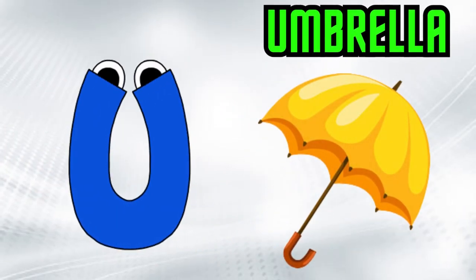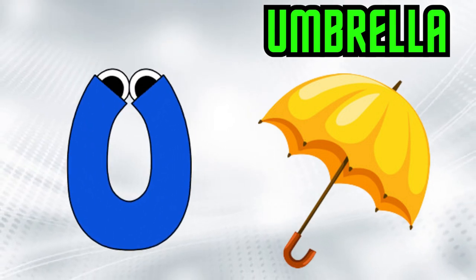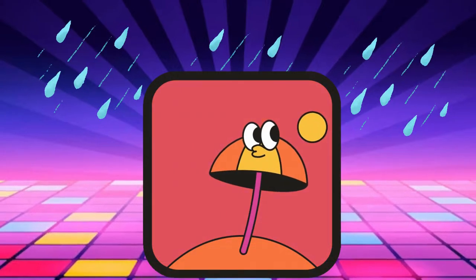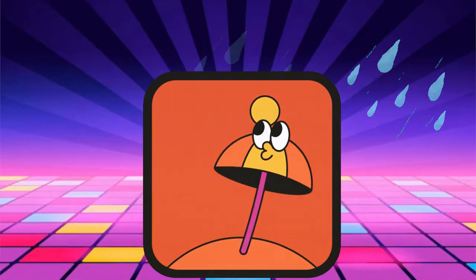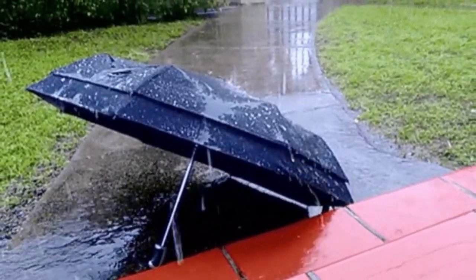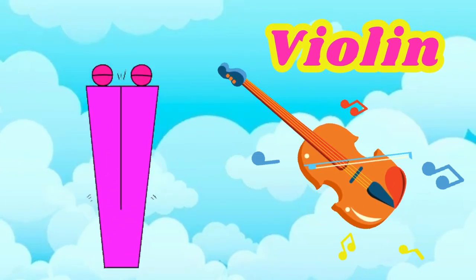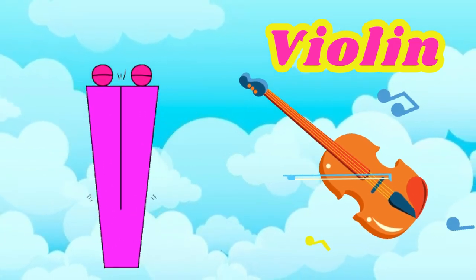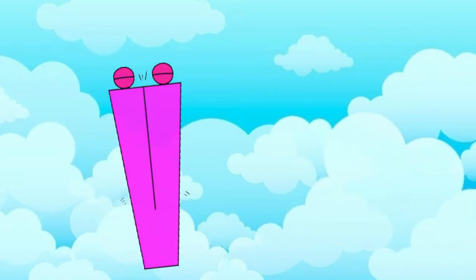U is for Umbrella. U-Umbrella. V is for Violin. V-Violin.